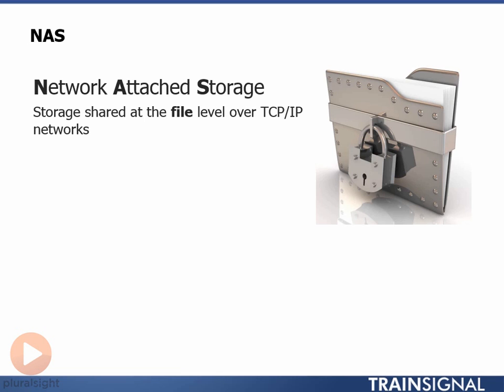It might be easy to think of a NAS storage system — sometimes called a NAS appliance, a NAS array, or a filer — as a purpose-built file server. File servers, like Windows servers and Unix servers, take local file systems and export or share them to other systems over the TCP/IP network. And that's exactly what a NAS device does: it takes local storage resources, formats them with a file system, and shares and exports them to clients over an IP network.